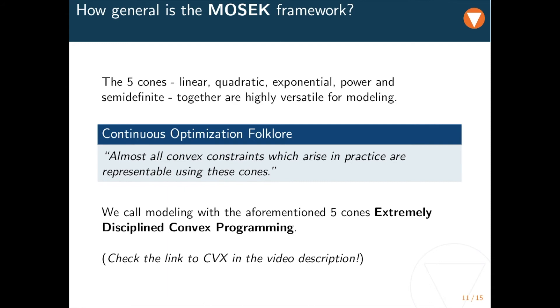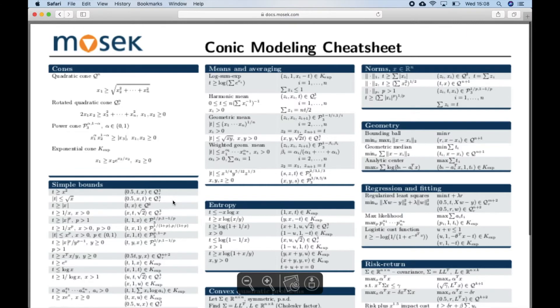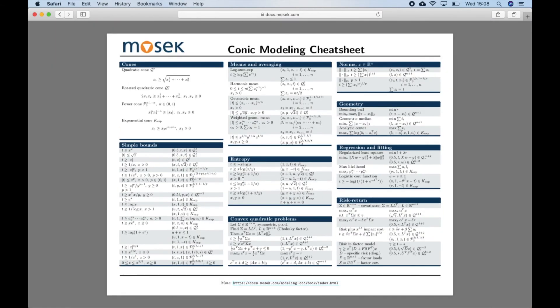In that regard, being extremely disciplined just means to apply the even more restrictive but simple rule of using only 5 cones, being rewarded with guaranteed convexity. In the documentation section of our website we provide a conic modeling cheat sheet. It shows what extremely disciplined convex programming can do at a glance.